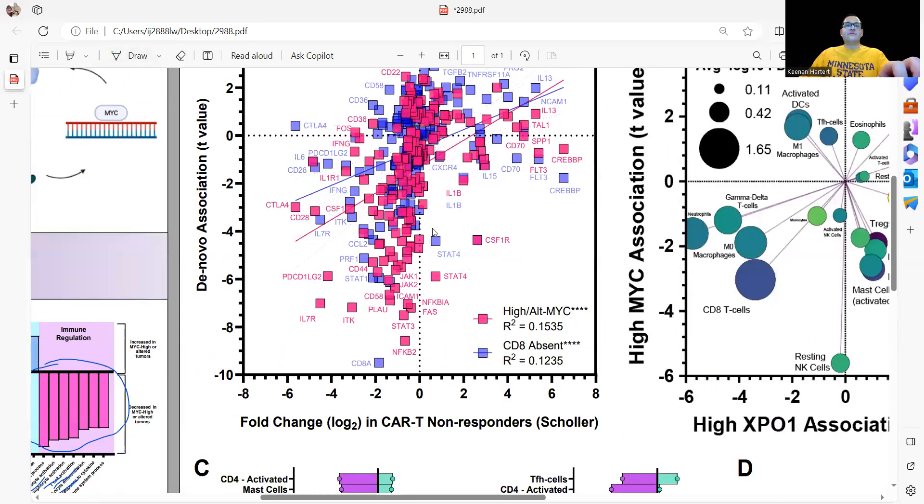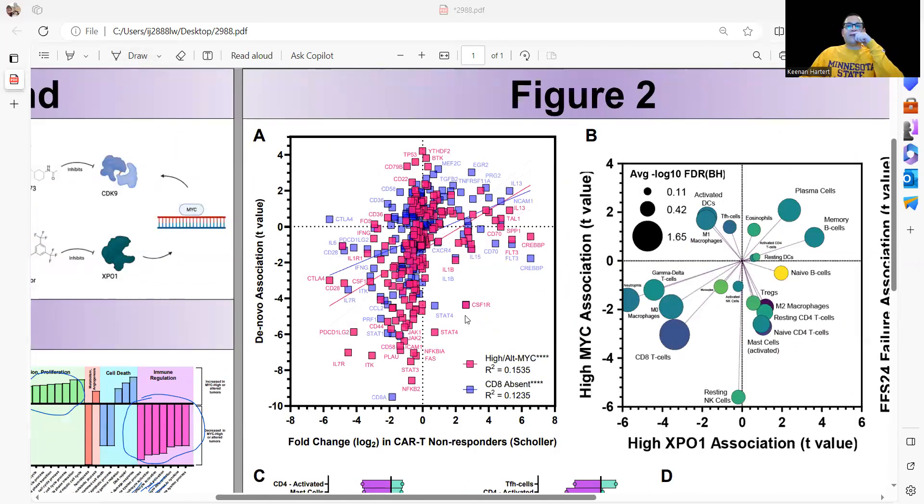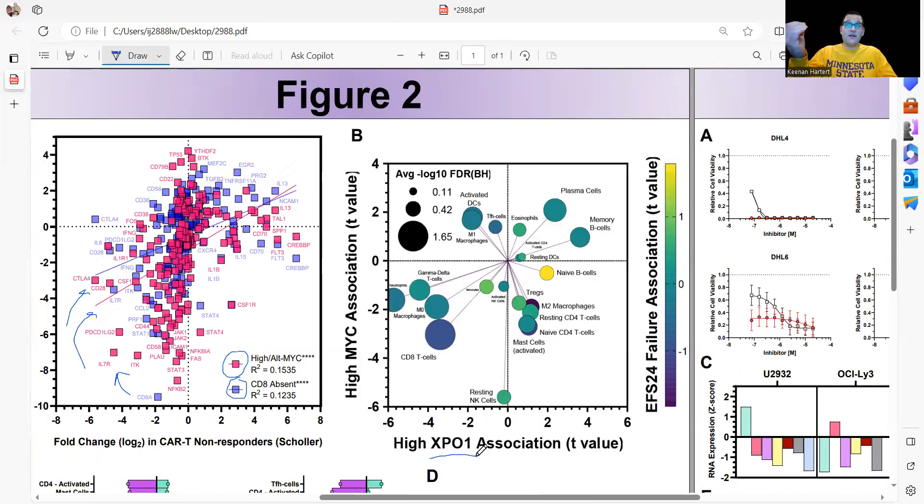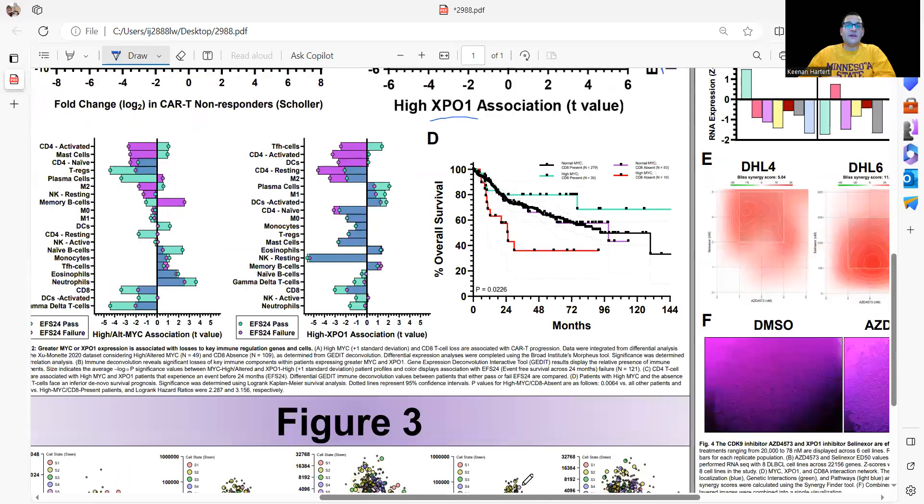We found groups that were CD8 absent after immune deconvolution. We found associations. Again, if you have high MYC or altered MYC, we see a lot of those immune genes showing up twice in that double loss category. Incorporating XPO1 associations - if you have high XPO1, one standard deviation or above, we see a big mega double loss of CD8 T cells when you have high MYC or high XPO1, and those are also lost when facing a dismal EFS24 failure outlook.